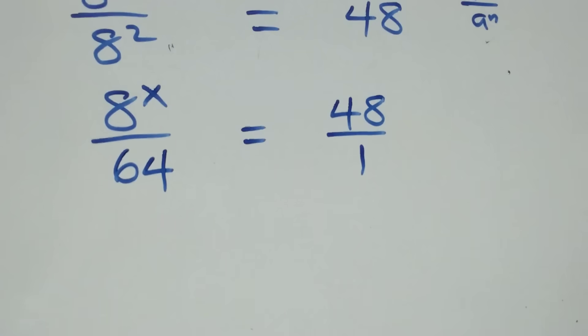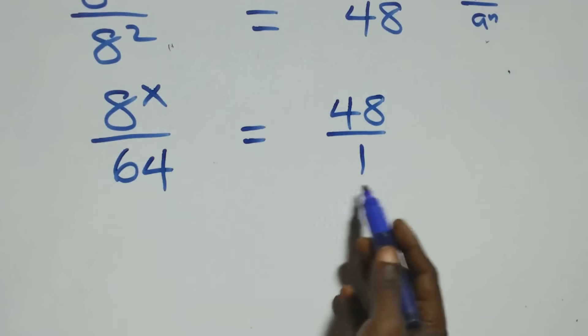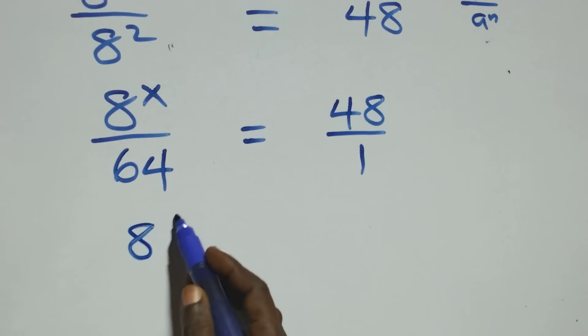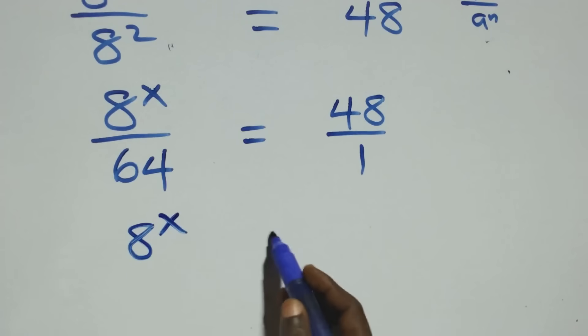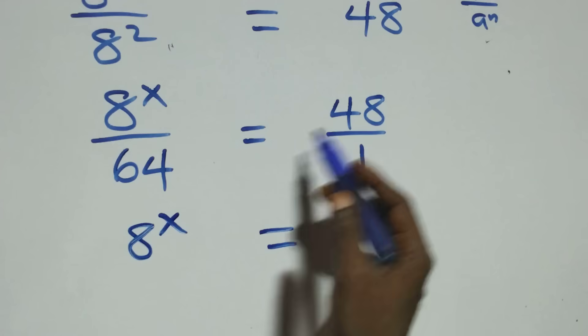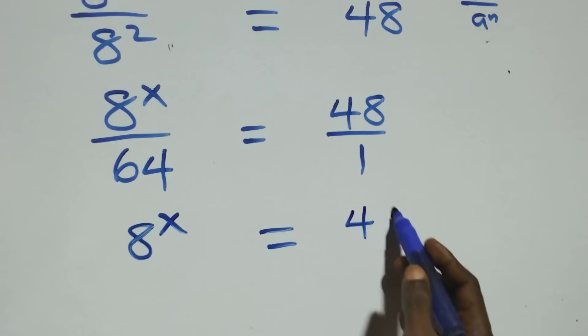In the next step here, we cross multiply — that is, 8 raised to power x times 1, which is the same thing as 8 raised to power x, and equals 48 times 64.